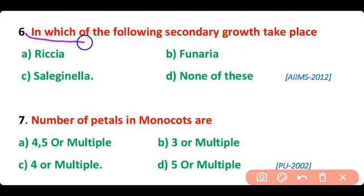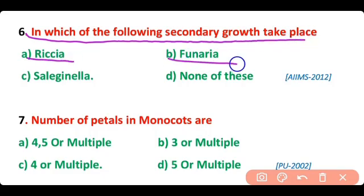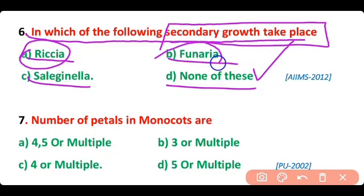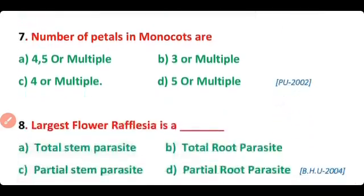Question 6. In which of the following does secondary growth take place: Riccia, Funaria, Selaginella, or none of these? The correct answer is option D. Secondary growth does not take place in any of the given options — Riccia, Funaria, and Selaginella are pteridophytes — while secondary growth takes place in angiosperms only.